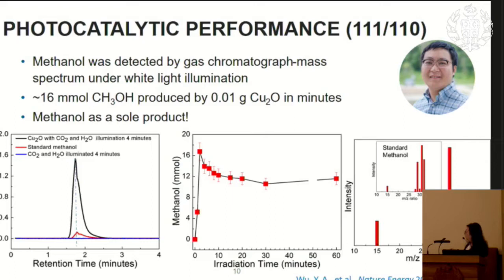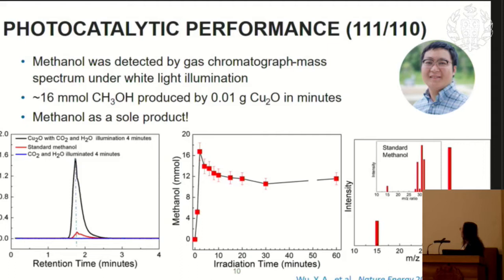Methanol was likely retained near the surface of the cuprous oxide particles and could not be released from the reaction vessel. By looking at the GC-MS, we saw all the peaks expected for methanol, confirming the purity of our compound. Looking at the two different particles: the cubic particles were much more inactive — the amount of methanol produced was only 10% compared to those particles terminated with 110 facets. This told us that active sites are critically important, and that the same compound with different facets can produce tremendous differences in efficiency.